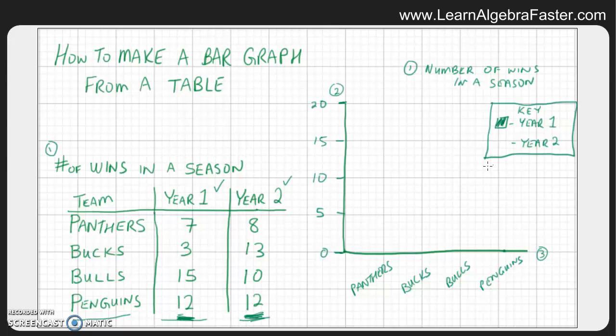All right, let's go ahead and let's graph the year one data. For the Panthers, they had seven wins in year one, and year one is the green color that I'm doing now, so we will go up to seven and color that in. The Bucks won three games in year one. The Bulls won 15, and the Penguins won 12.